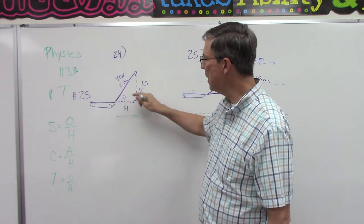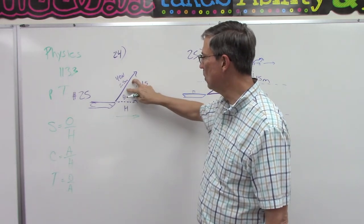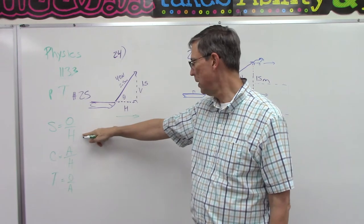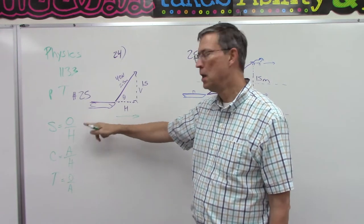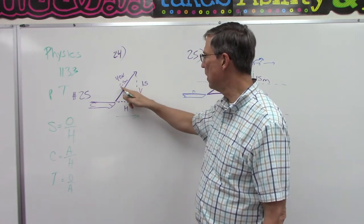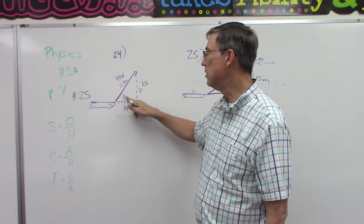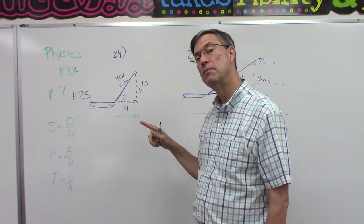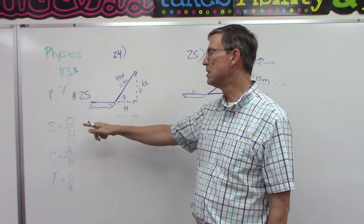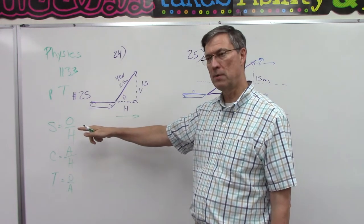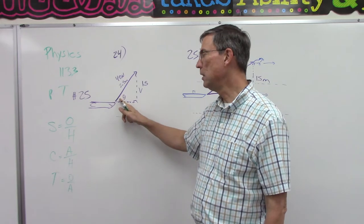To find the angle, we know the opposite, and we know the hypotenuse. Opposite over hypotenuse. So you can do opposite over hypotenuse, 1.5 divided by 2.5. And then when you get that number, inverse sine, second function, shift, whatever, sine, and you'll know the angle.